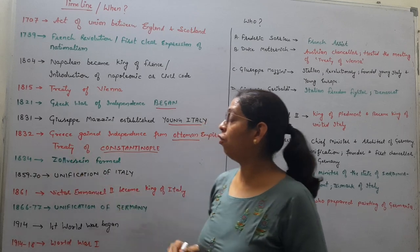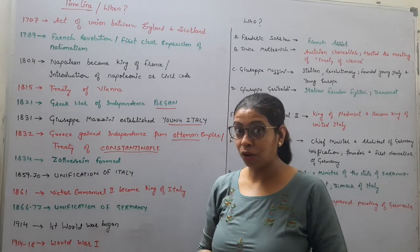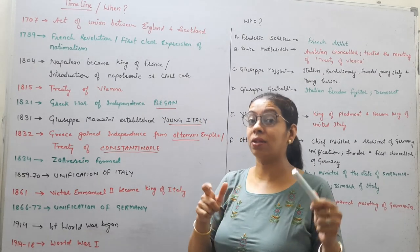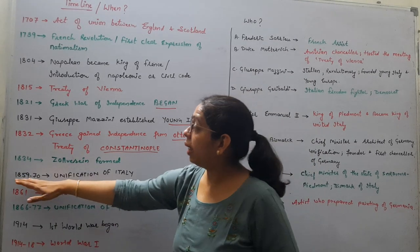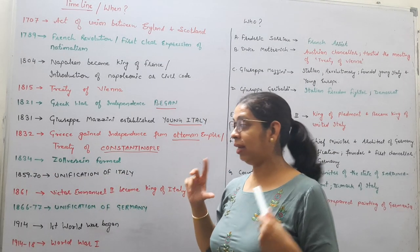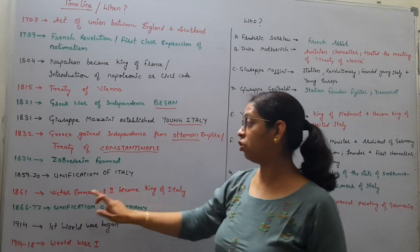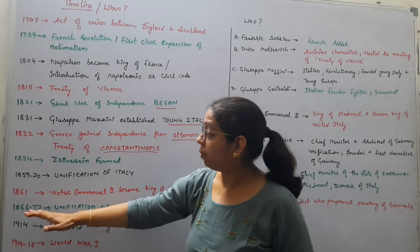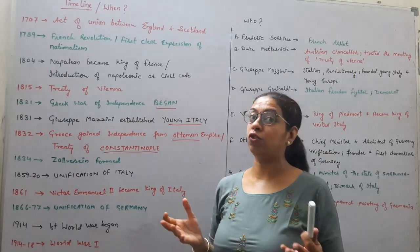Then 1834 — Zollverein was formed, which was a customs union. In one question, you can be asked what type of union it was. 1859 to 1871 — unification of Italy; this is the time period. 1861 — Victor Emmanuel II became king of Italy. Then 1866 to 1871 — unification of Germany.